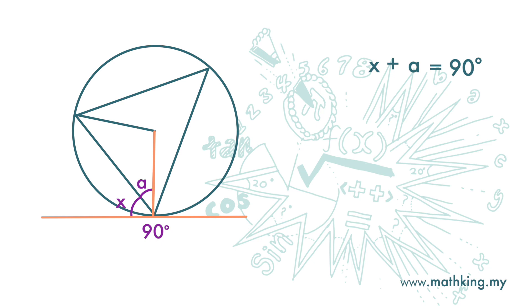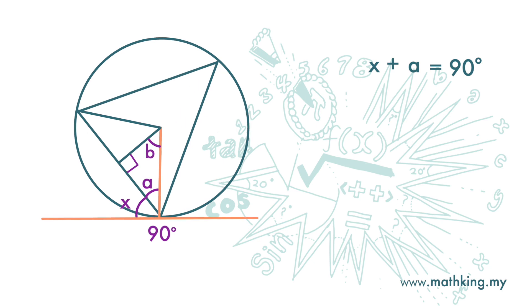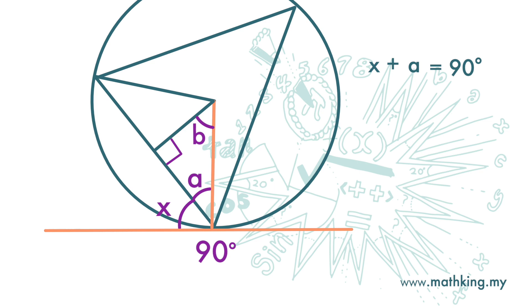Next, we draw a perpendicular bisector from center O, so it's 90 degrees here. We call this angle b. Note that angle a and angle b also add up to 90 degrees.